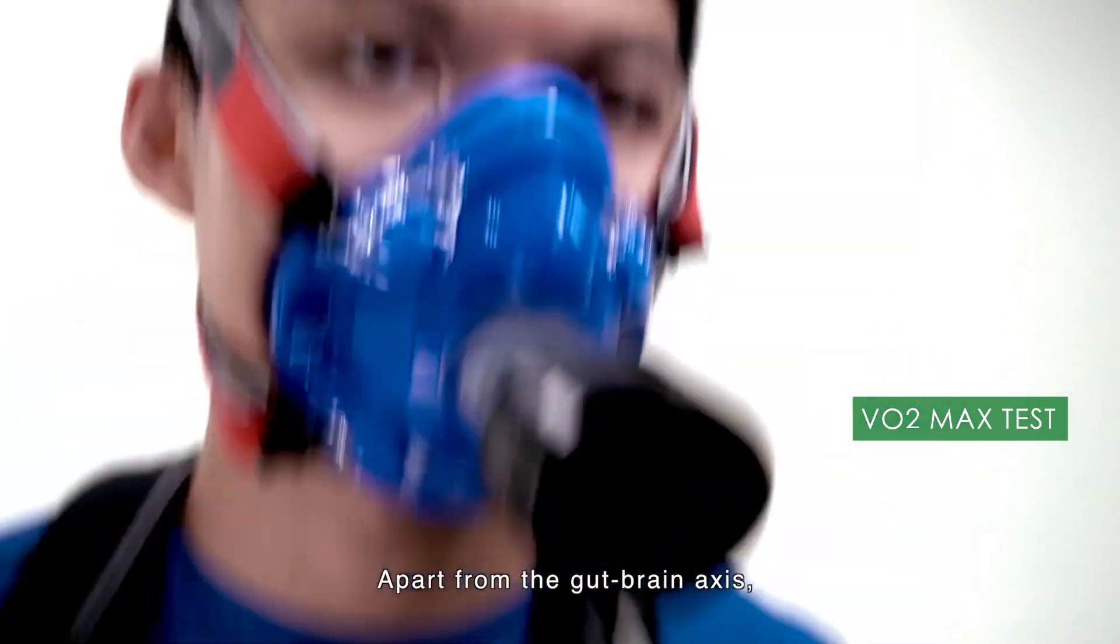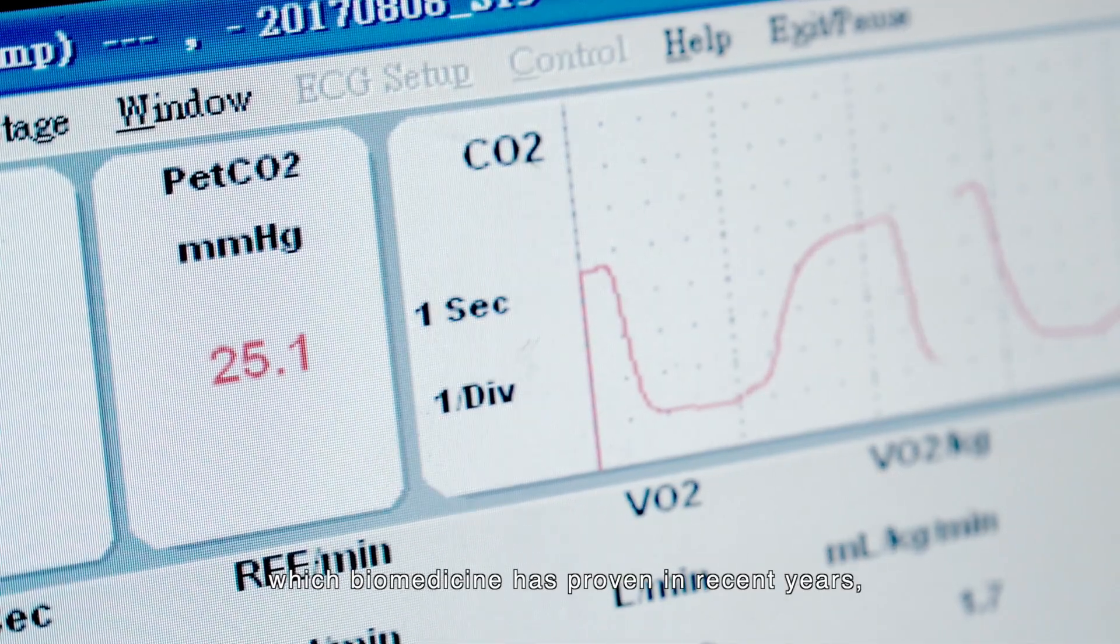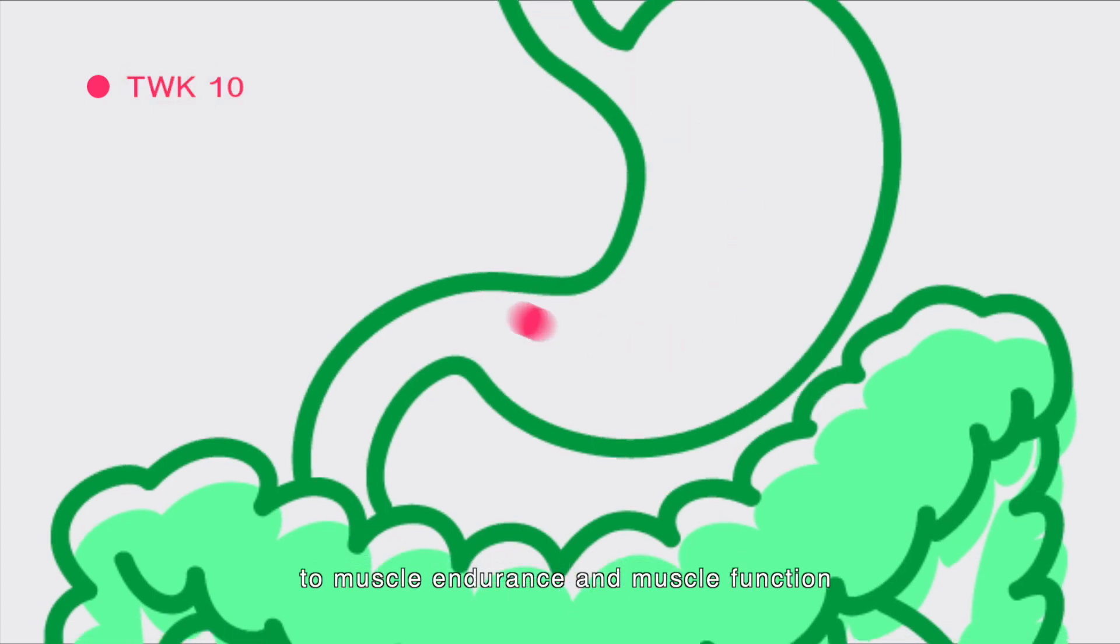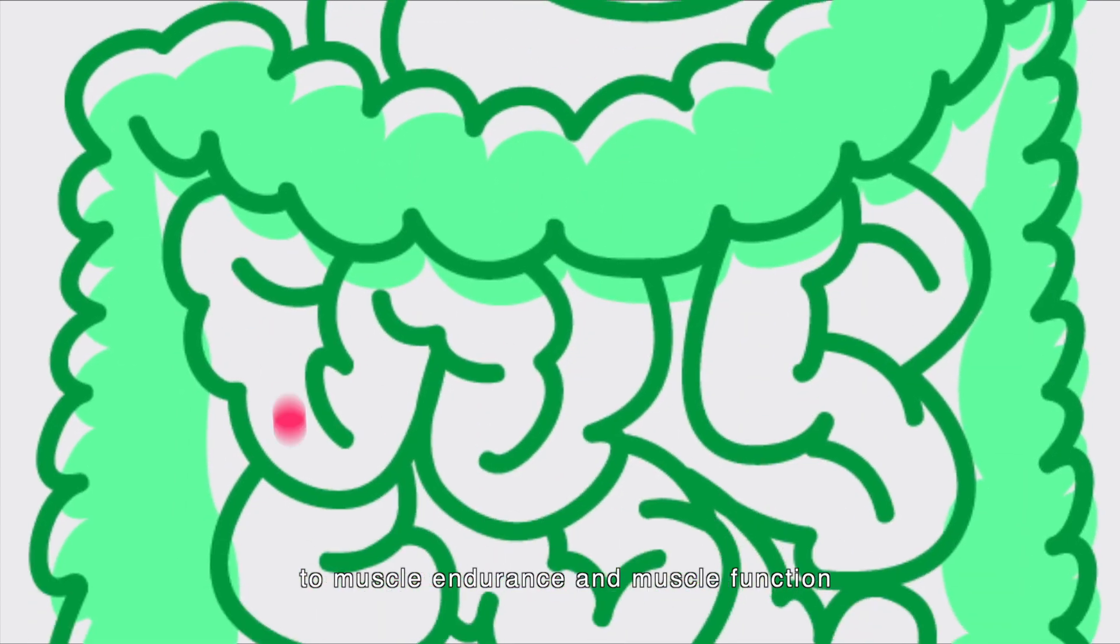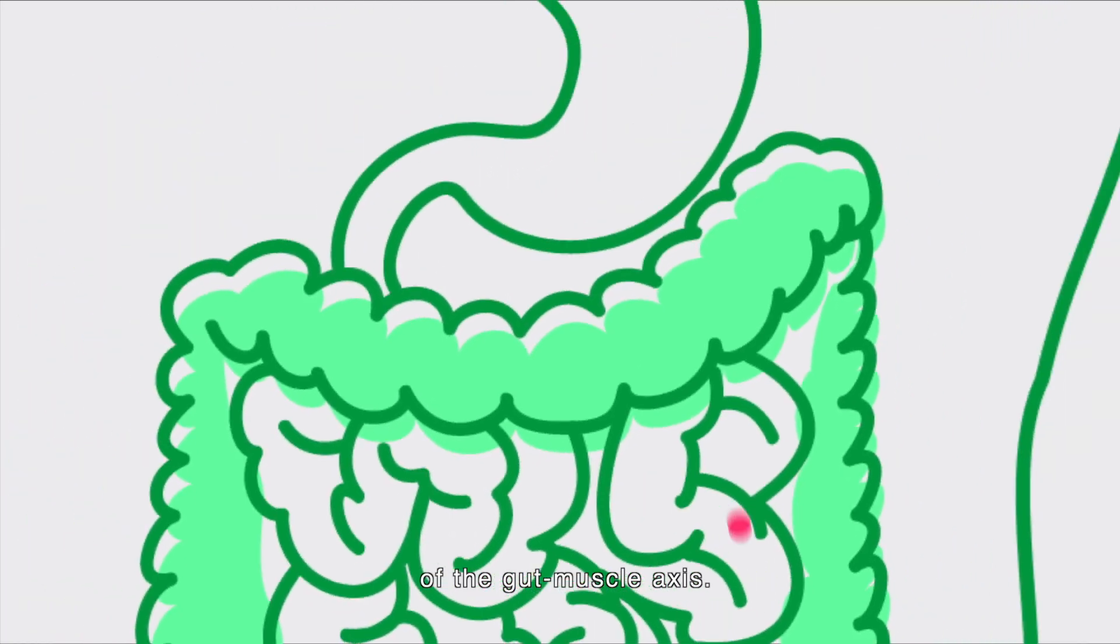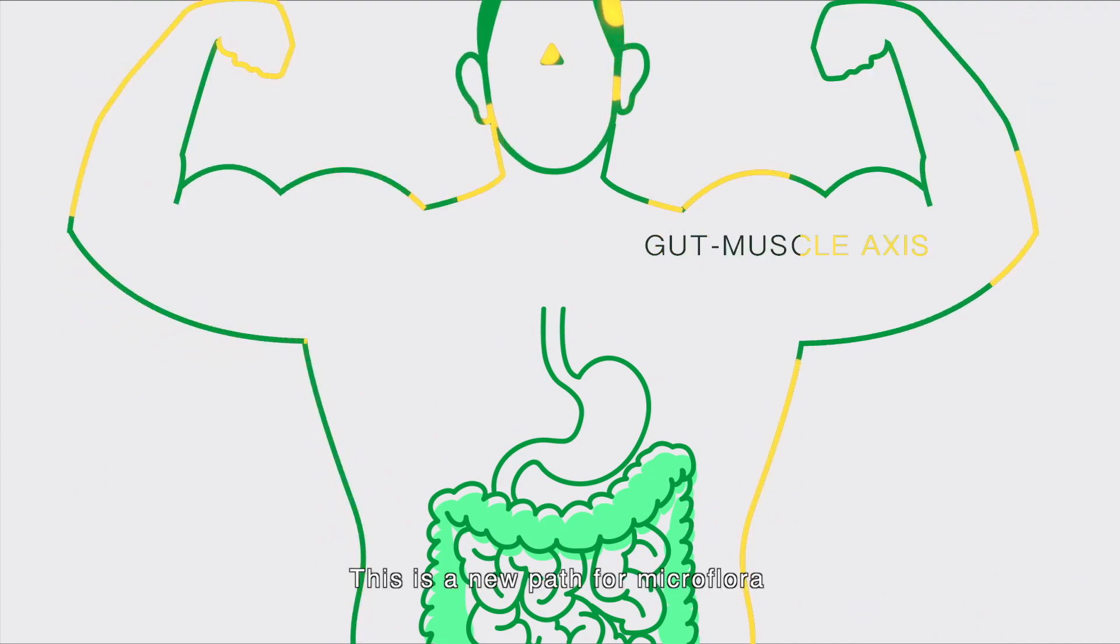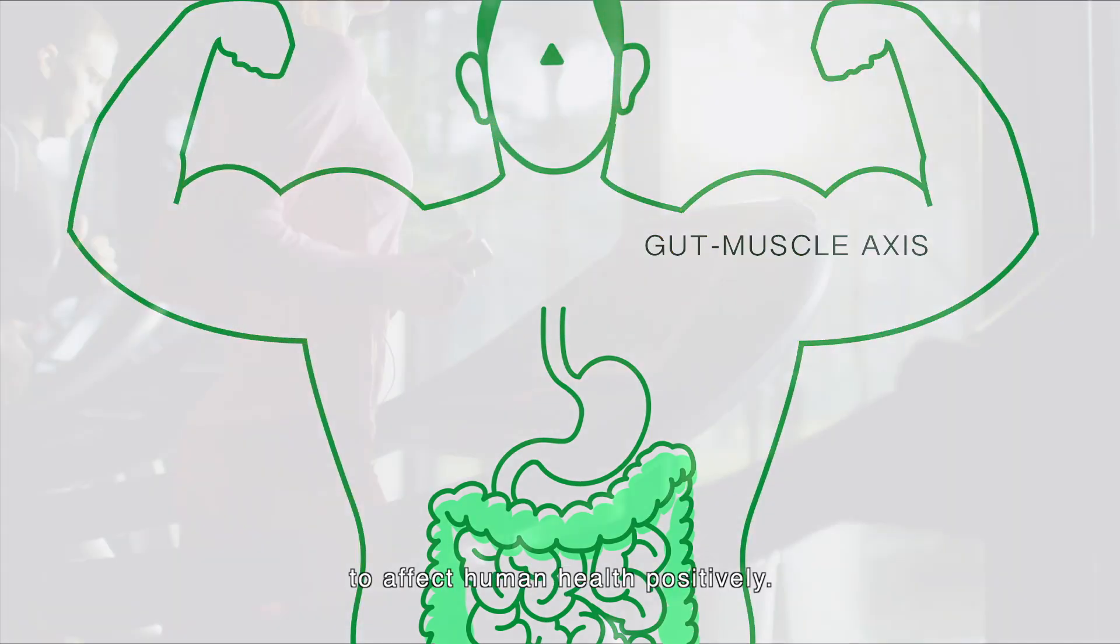Apart from the gut-brain axis, which biomedicine has proven in recent years, the contribution of gut microbiota to muscle endurance and muscle function has newly added to the fundamental theories of the gut-muscle axis. This is a new path for microflora to affect human health positively.